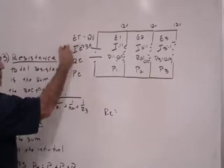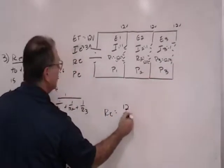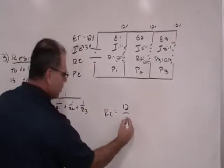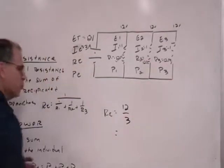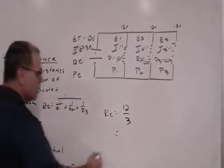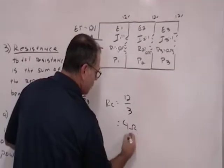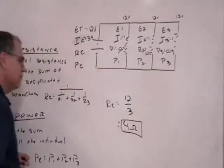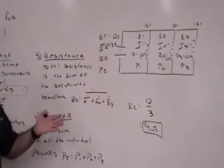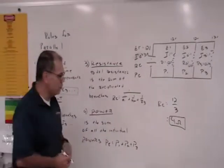I already have my total voltage and I have my total current. That means that my total resistance is going to be 4 ohms. Now how do we prove that using the reciprocated value?